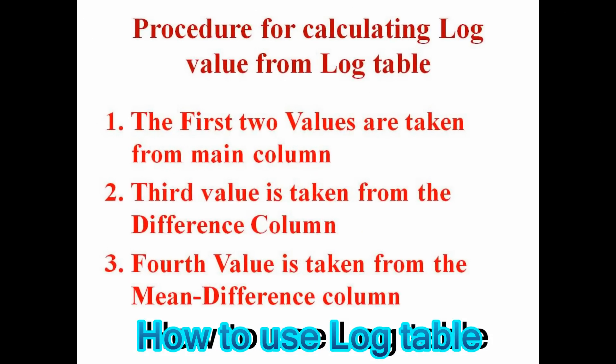Now let us discuss the procedure used for calculating the log value from the log table. In this procedure, we use the columns to find the different values of log. The first two values are taken from the mean column, the third value is taken from the difference column, and the fourth value is taken from the mean difference column.